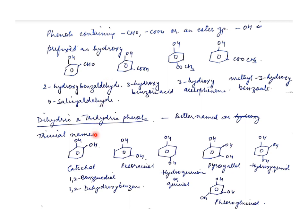Phenols that are dihydric or trihydric are mostly known by their trivial names. For example, if two OH groups are at the ortho position, we can call it 1,2-dihydroxybenzene, but it is commonly known as catechol. If the OH groups are at the meta position, it is 1,3-dihydroxybenzene, commonly called resorcinol. Similarly, if OH is at the 1,4 position, the commonly accepted name is hydroquinol or quinol.